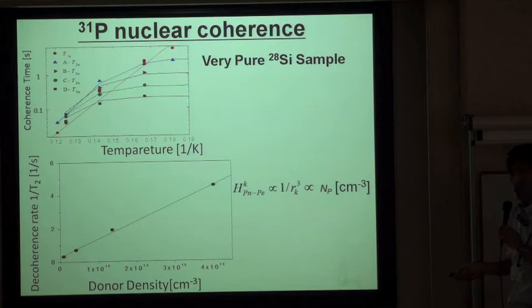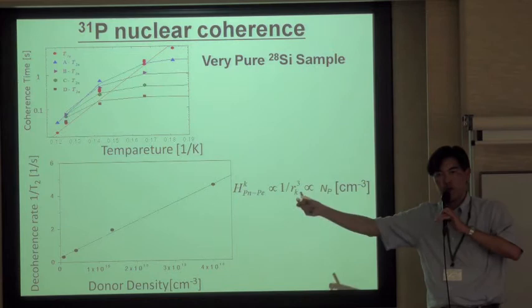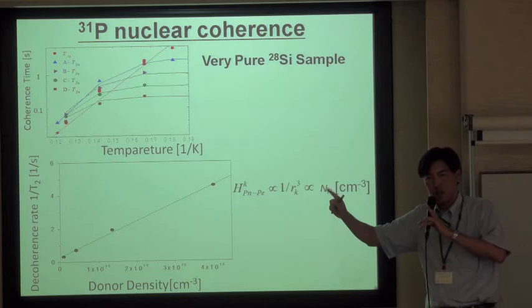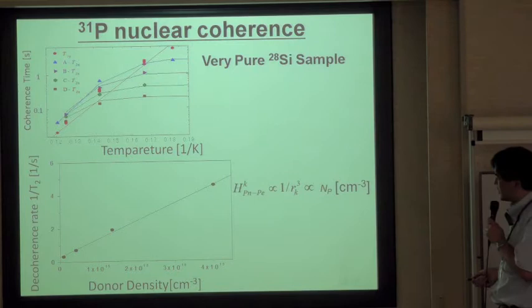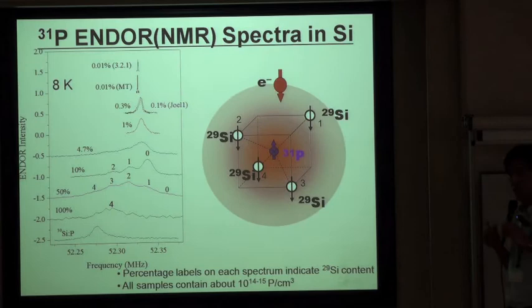The phosphorus nuclear spin decoherence rate also depends on the concentration of phosphorus. The interaction between phosphorus donors affects the coherence of the nuclear spins sitting at donor positions. What ultimately limits the 31P nuclear spin coherence is the dipolar coupling between electron spins, and this becomes visible only when we eliminate the background 29Si nuclear spin concentration and other defects.